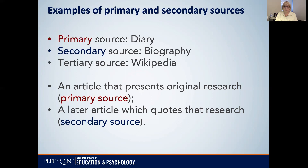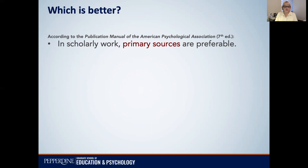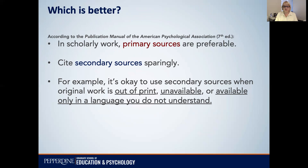So which is better — should you use the secondary source or the primary? In scholarly work, primary sources are always preferable. When possible, when you come across a primary source quoted in a secondary source, you should try to track down that primary source. You can find the title in the references of your secondary source, then plug that title into a database or search engine to see if you can get hold of it. If not, you should cite secondary sources sparingly. The exceptions are if the original work is out of print, unavailable, or available only in a language you don't understand.